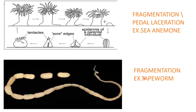Another type of fragmentation is seen in tapeworm. From the posterior end, the mature proglottids separate out either singly or in groups. This separating or fragmenting of proglottids from the posterior end is called apolysis, which is significant in tapeworm because these proglottids contain developed embryos that are transferred from the primary host (man) to the secondary host (pig).